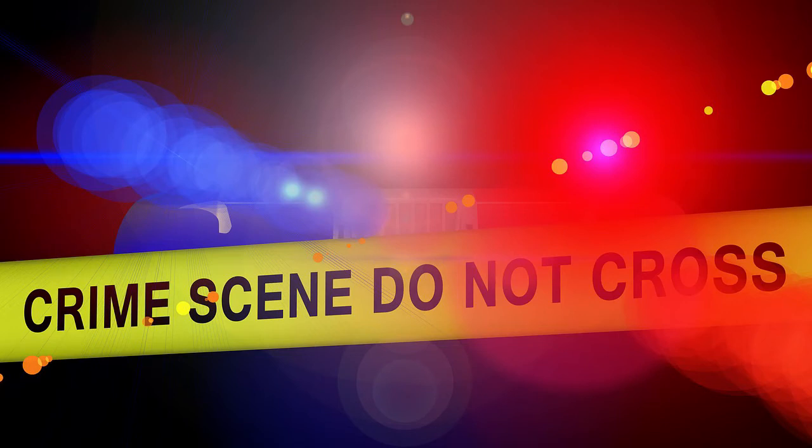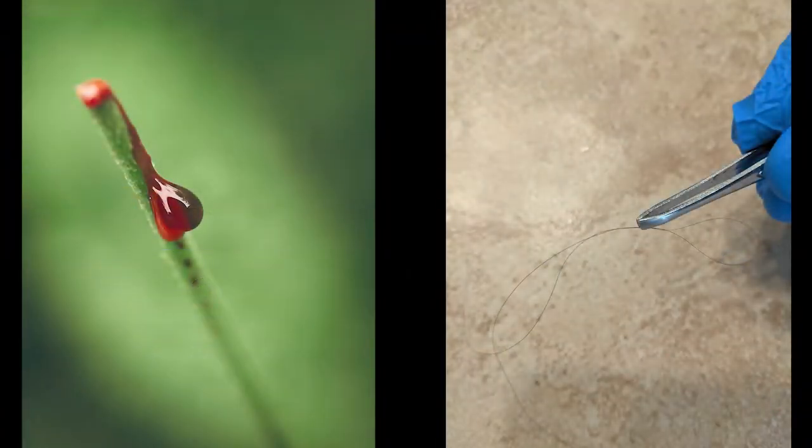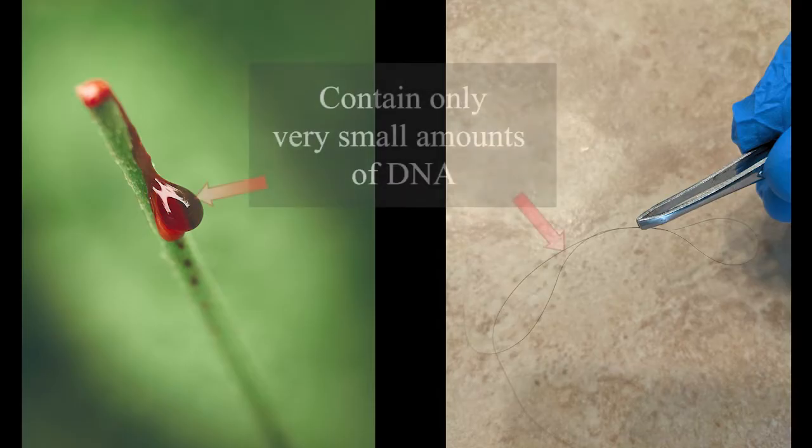Imagine that you are investigating a crime scene and only find a tiny drop of blood or hair follicle as clues. Although these pieces of evidence have DNA, they only have a very small amount, not nearly enough to deduce who they belong to.